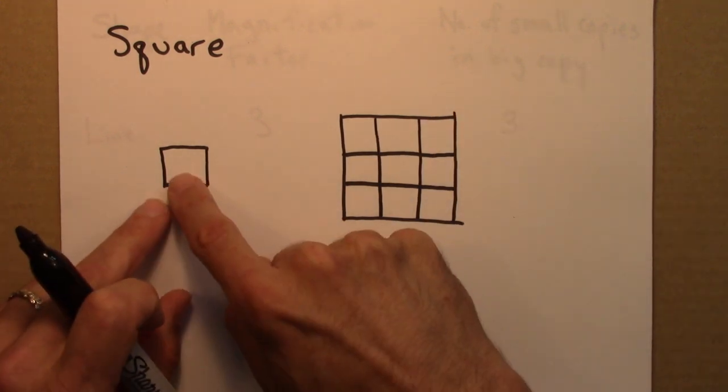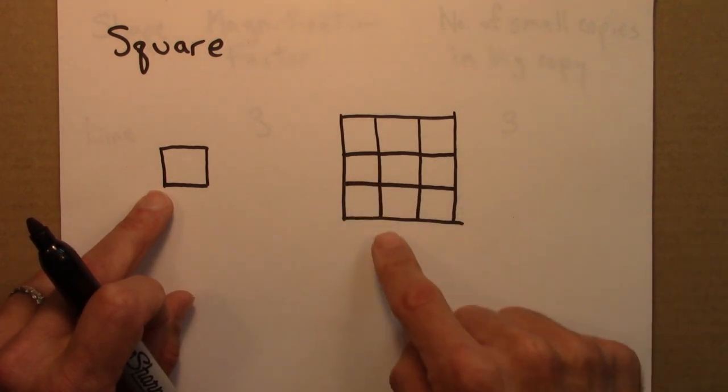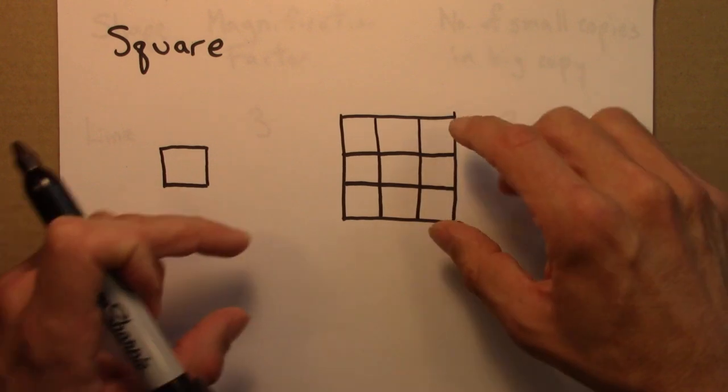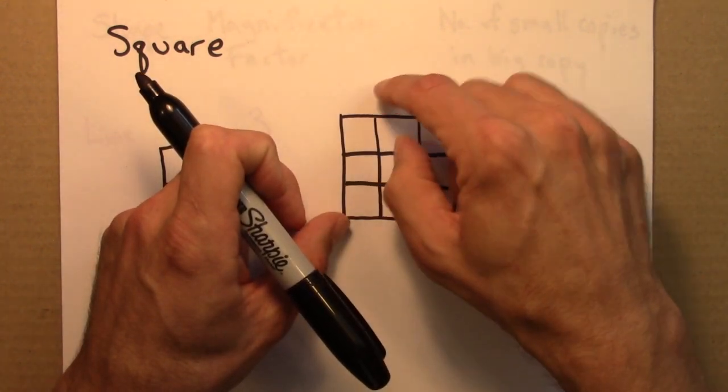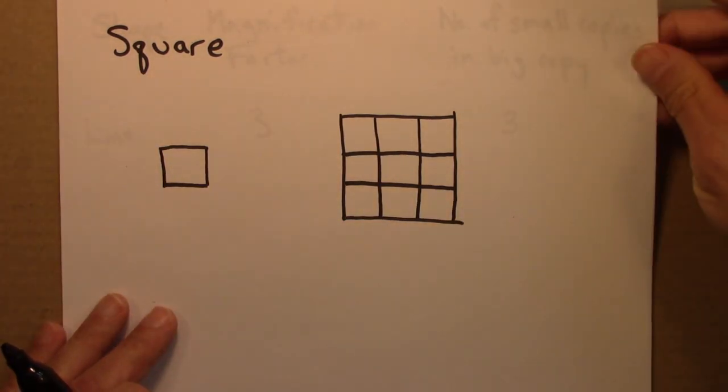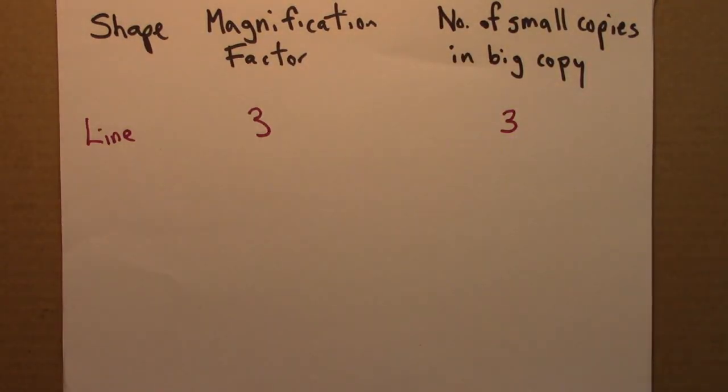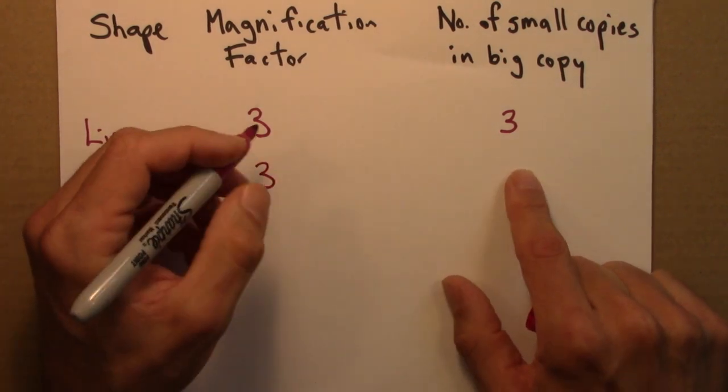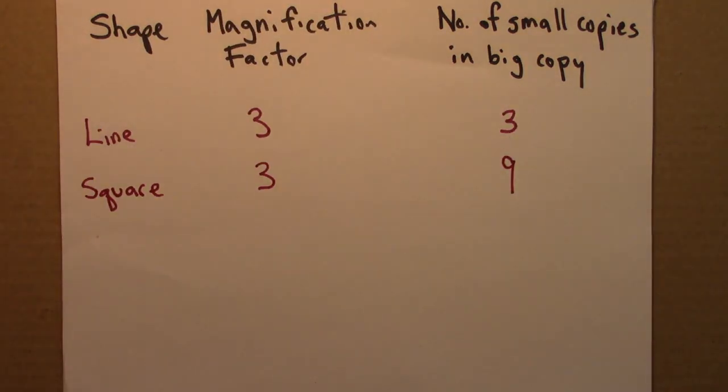The hand drawing isn't perfect. The idea is that this square is the same size as that. So there's three times three equals nine small squares in this big square. And the big square is magnified by a factor of three, right? It's stretched by three in this direction, three in that direction. So going back to my table, the shape of a square, magnification factor of three, the number of small copies in the big copy is nine.